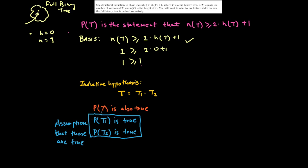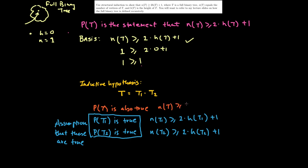Using the assumptions in blue to show everything in orange is true: P(t1) being true means n(t1) ≥ 2·h(t1) + 1, and P(t2) being true means n(t2) ≥ 2·h(t2) + 1. What we want to show — the piece in orange — is that n(t) ≥ 2·h(t) + 1.